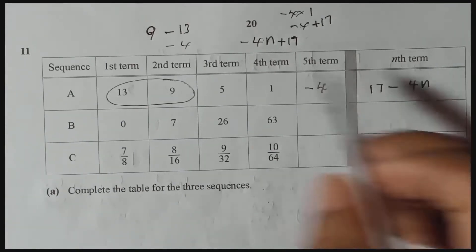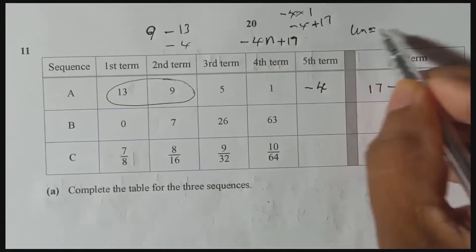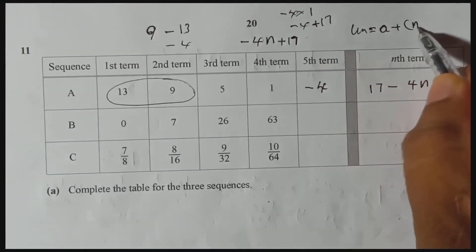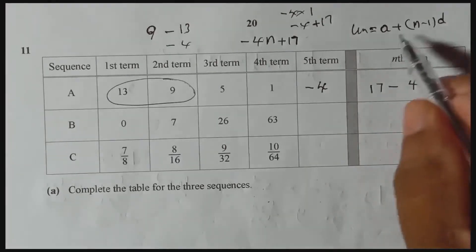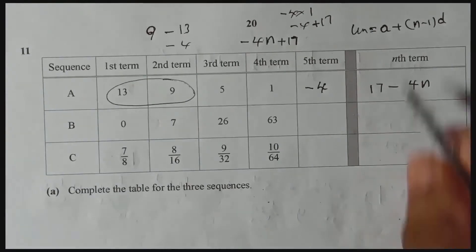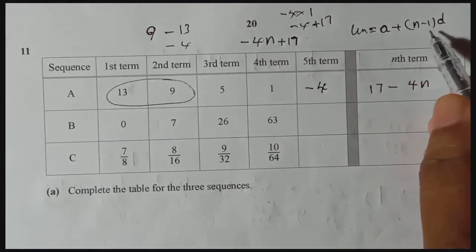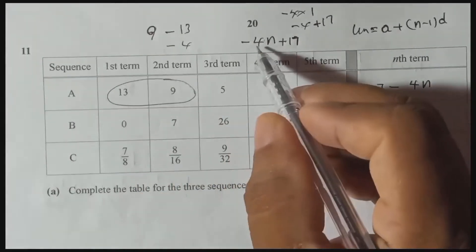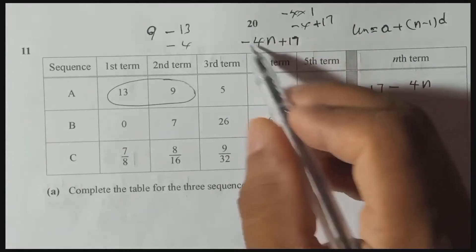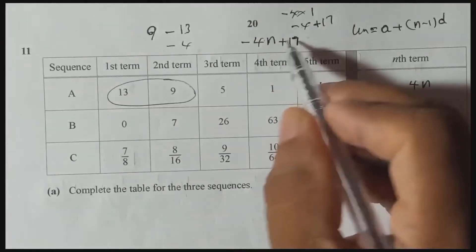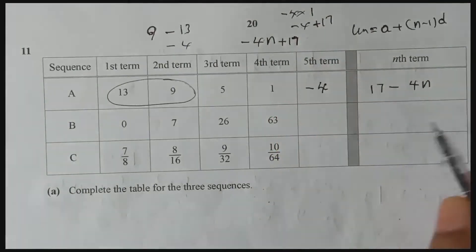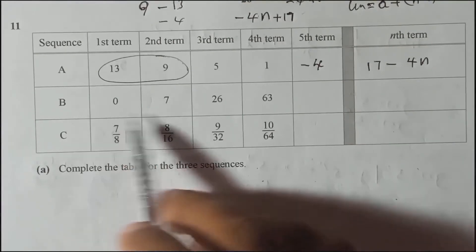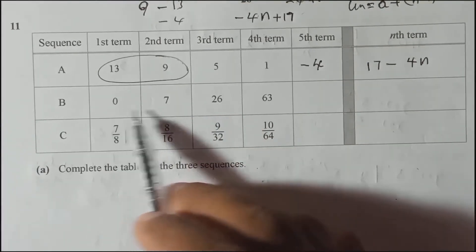You can also use the arithmetic sequence formula: Un = a + (n−1)d and substitute to find the nth term — that also works. But here I'm showing you the quick method: for an arithmetic sequence, just put the common difference times n, replace n with 1, and check how much you need to add to reach the first term. That value goes as the constant.